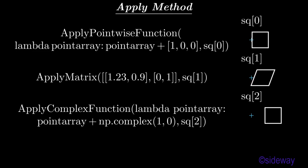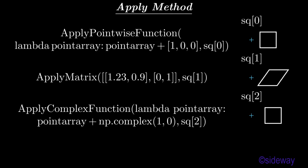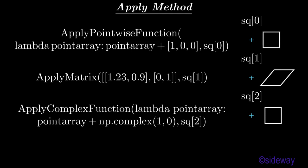Apply matrix method is used to animatedly transform the points of a mathematical object by applying a specified matrix. Apply complex function is used to animatedly transform the points of a mathematical object by applying a specified complex function.